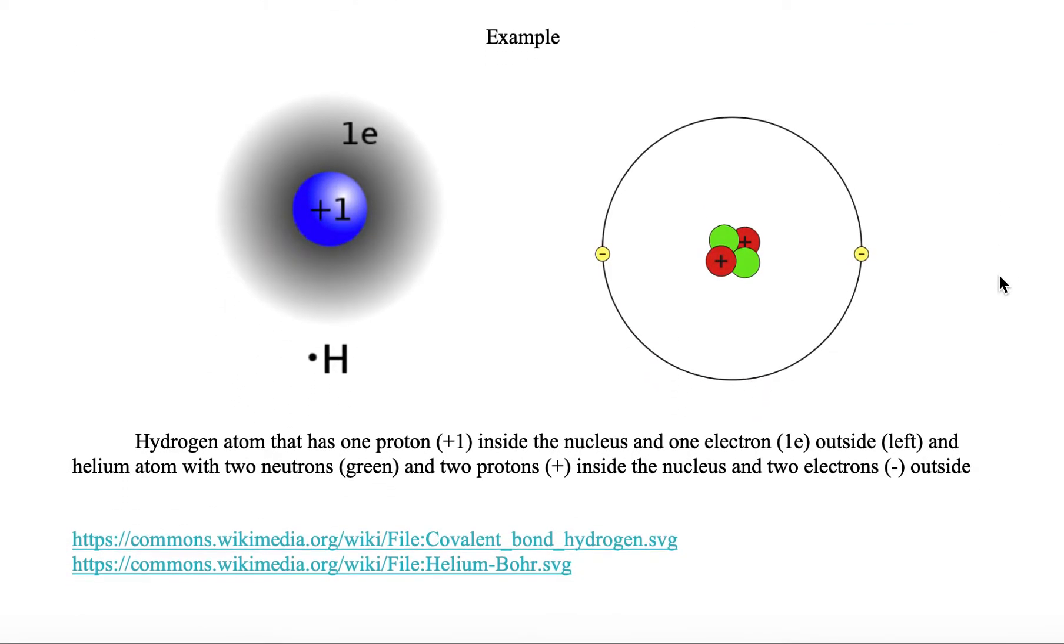On the left, we have a hydrogen atom, and on the right, we have a helium atom. Both atoms are elements on the periodic table.